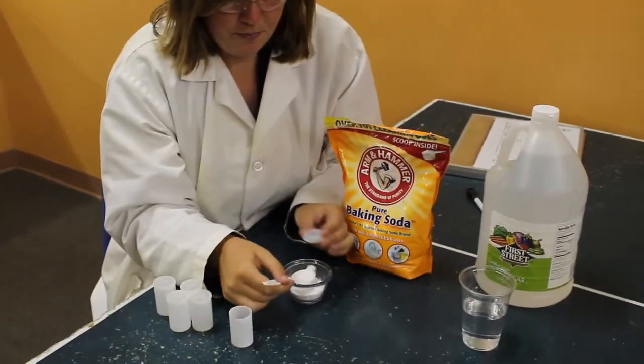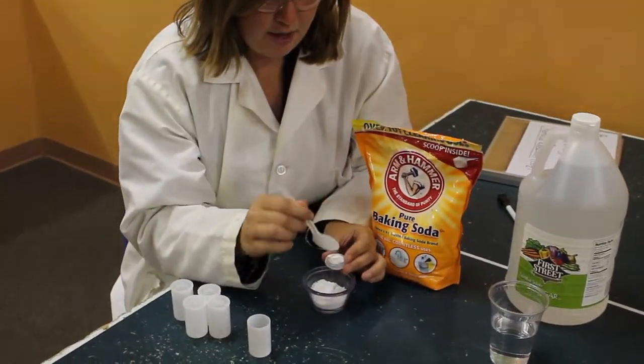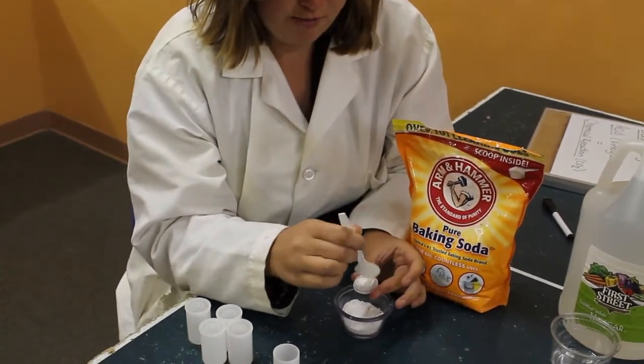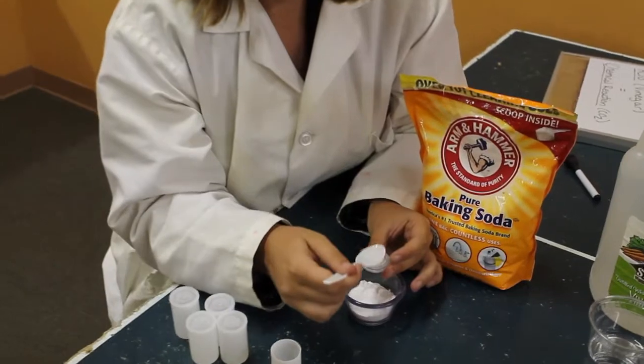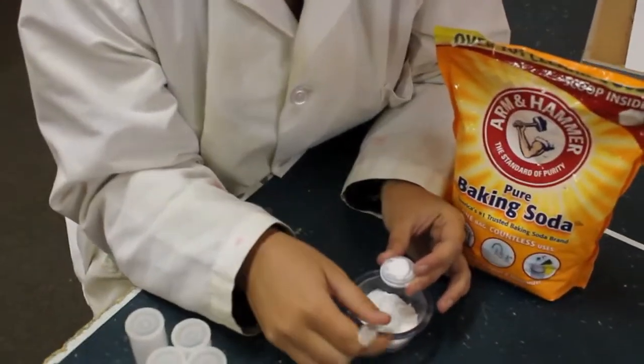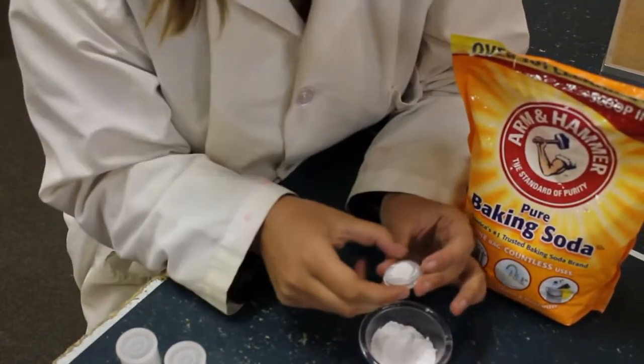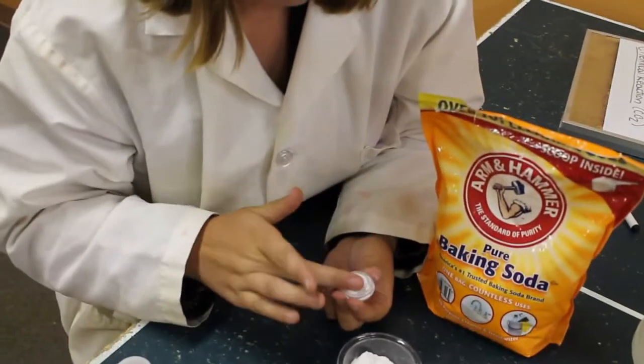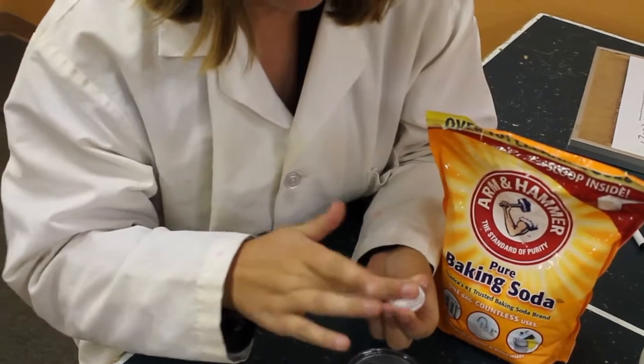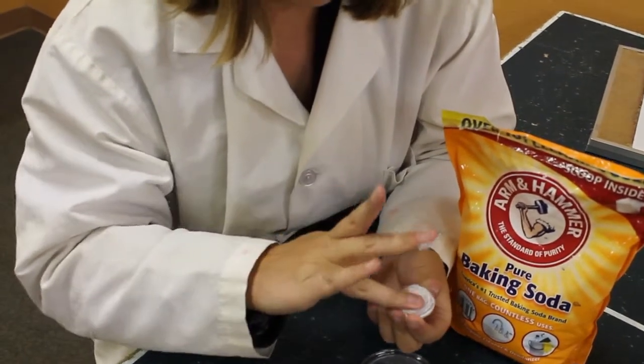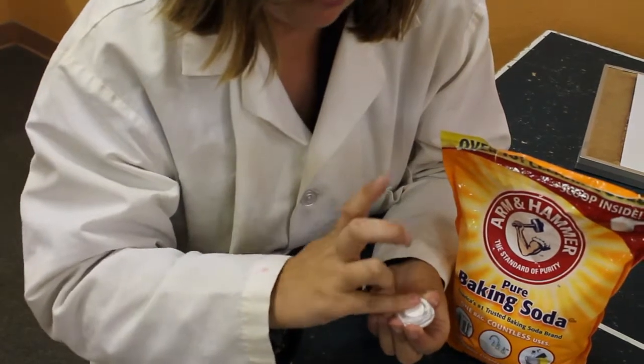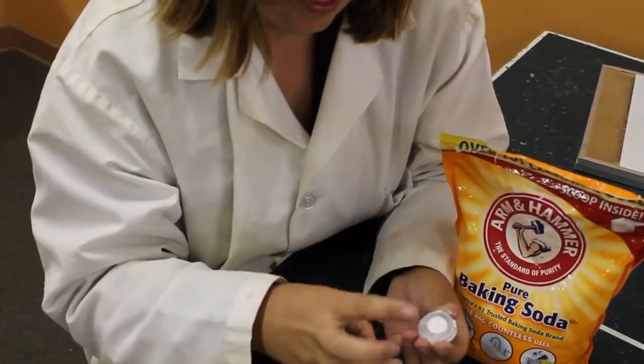So you take a scoop, put it in the well, and you don't want too much. I got a little bit too much there so we'll scrape some off and then so it doesn't all fall out, have to do something kind of gross and you have to spit on your finger. Pat it down so it stays nice and tight. Excellent!